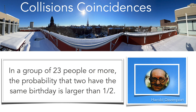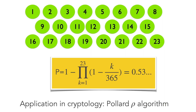The birthday paradox is counterintuitive at first. It was first noticed by Harold Davenport. If you have a group of 23 or more people, the probability that two of them share the same birthday is greater than one-half, which is not what you would expect given 365 days. The computation confirms this with the formula. There are applications in cryptology — Pollard's Rho algorithm, used for factoring integers, exploits this phenomenon.